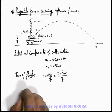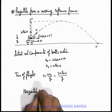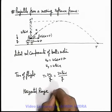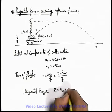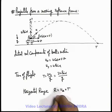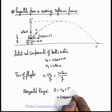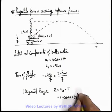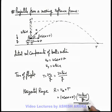Now if we wish to calculate the horizontal range of the projectile, the horizontal range can be simply written as velocity in x direction multiplied with time of flight. The horizontal velocity is u cos alpha plus v, and it is multiplied with time of flight, that is 2 u sin alpha by g. This is the way we calculate the horizontal range of the projectile.